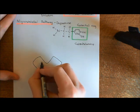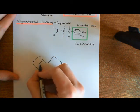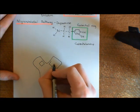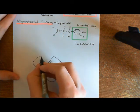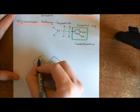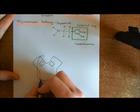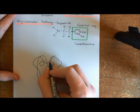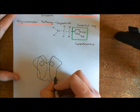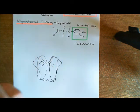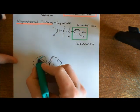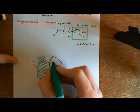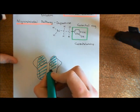Let's draw on the substantia nigra pars compacta: here is the left substantia nigra pars compacta and here is the right substantia nigra pars compacta. Let's also put the thalamus on top — the left thalamus and the right thalamus. We'll colour in the thalami in turquoise.